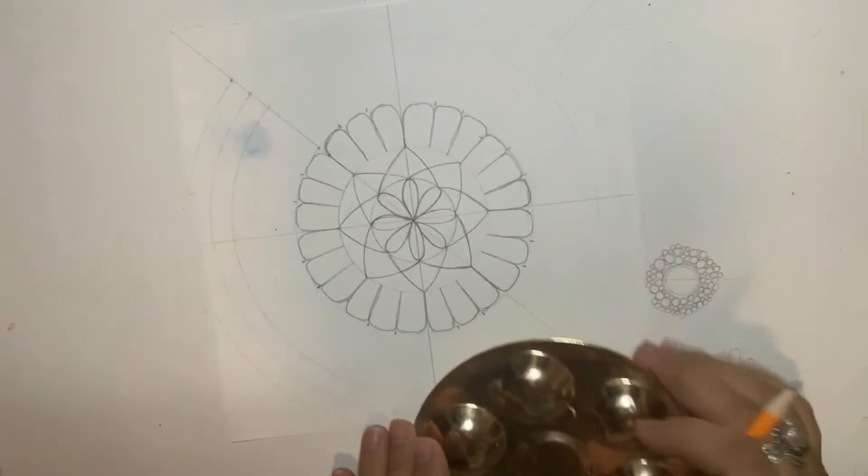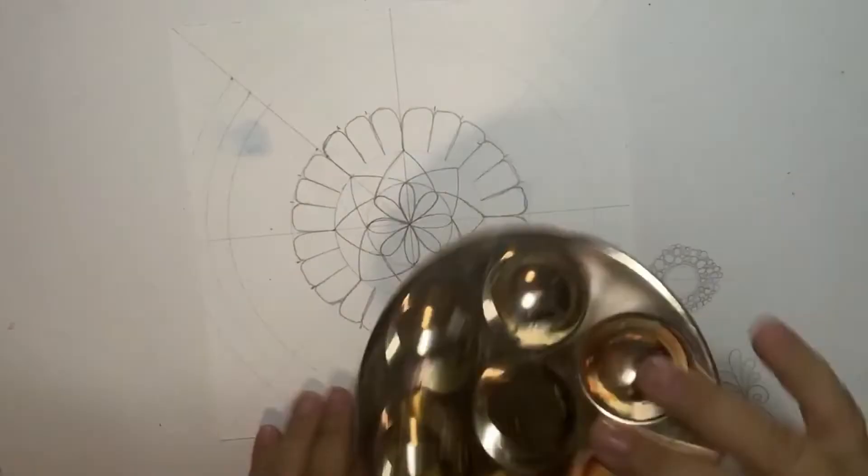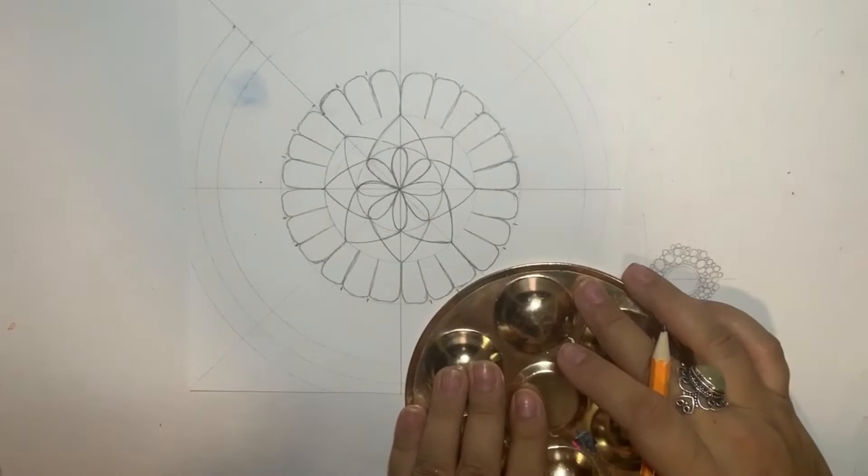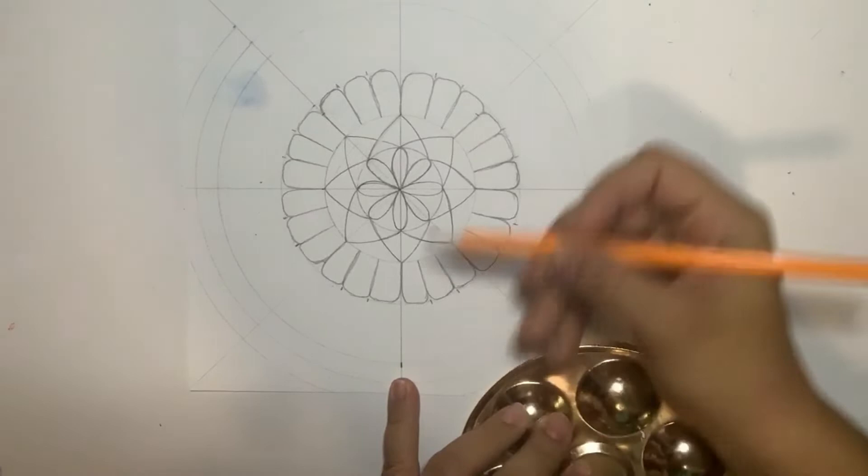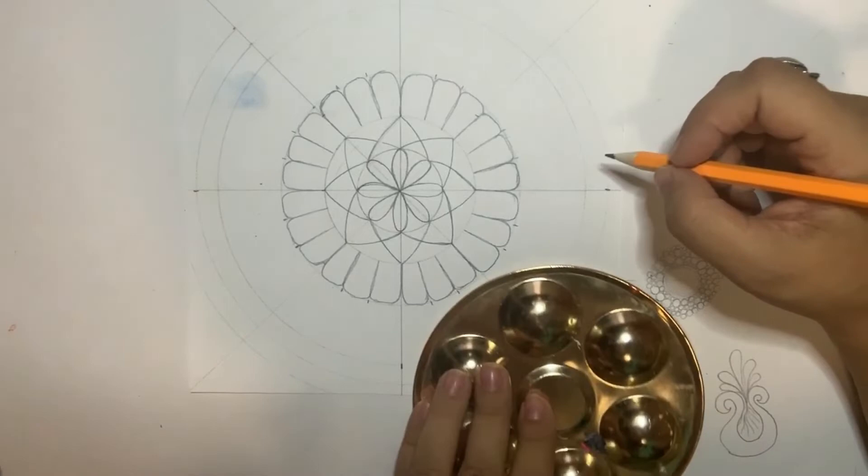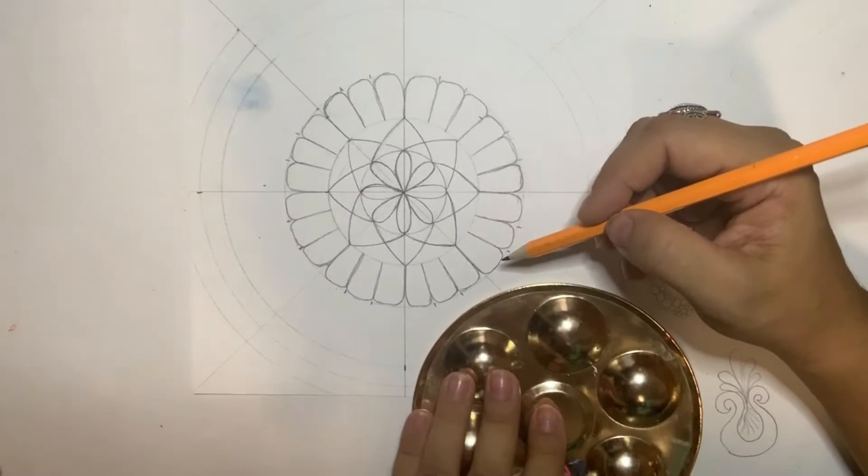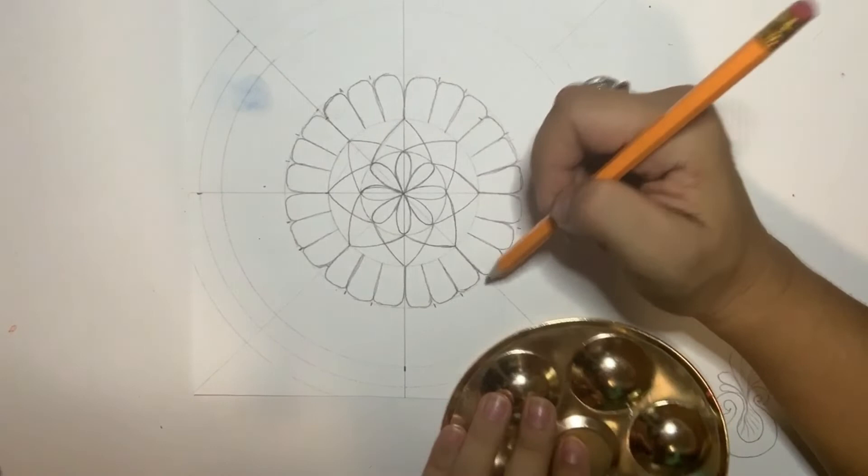And now I'm using this plate, but you can use like a tea plate, you know, for mugs for tea. They have a plate, use that as a reference. Then I made a mark for north, south, east, and west.